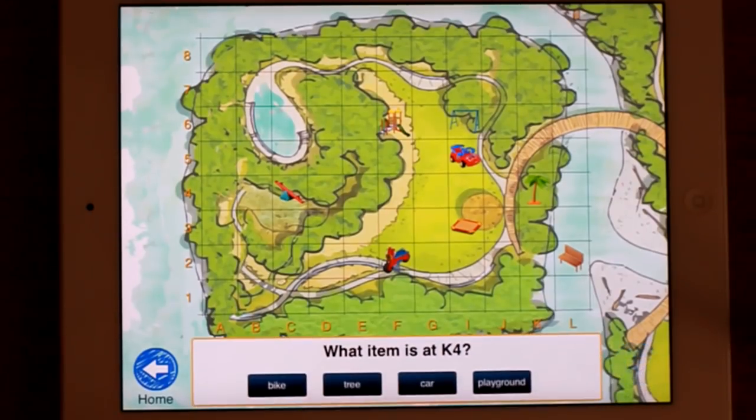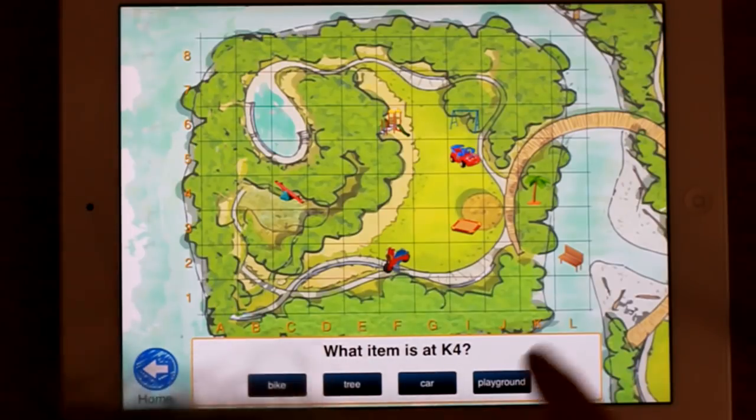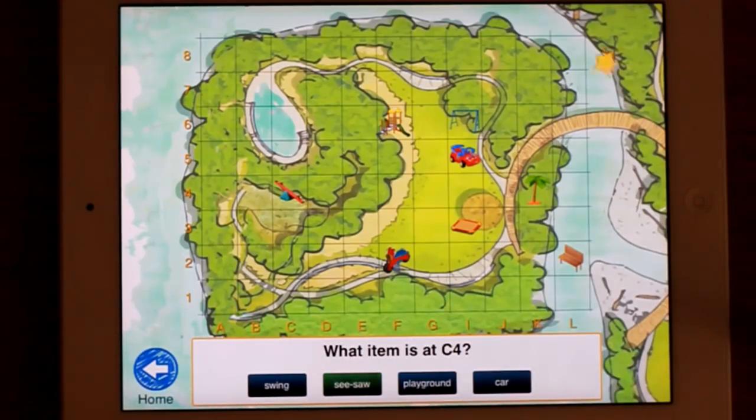And then you press start. So you are answering questions about what you have just made. You can of course use this so one child makes it and the next child answers the question. What item is at K4? K4. It's the tree. There we go.